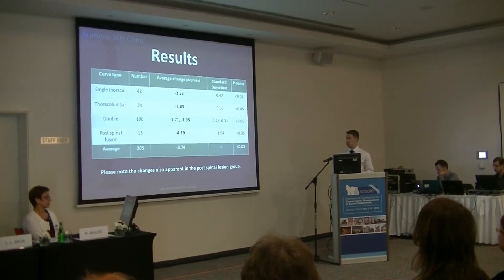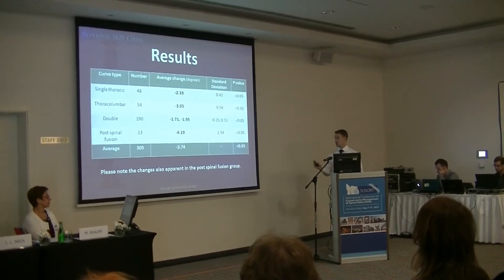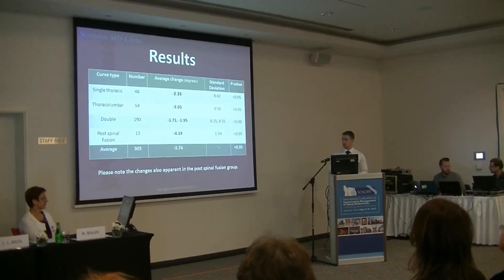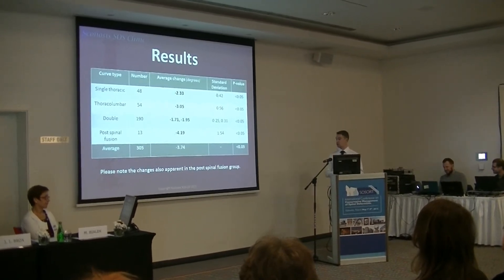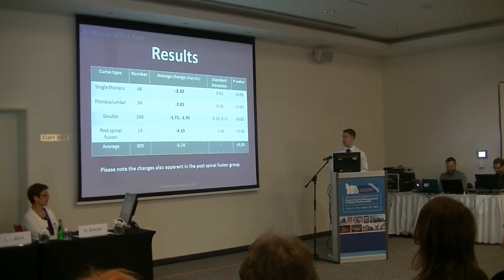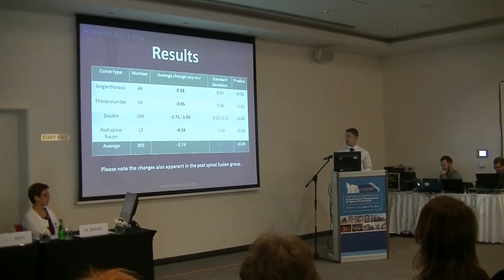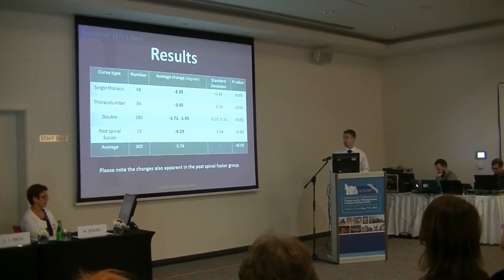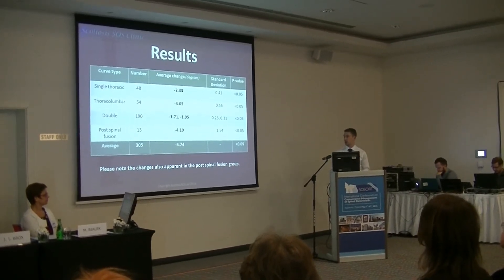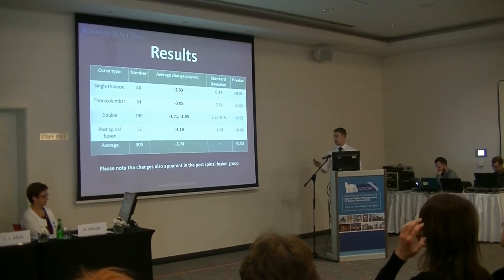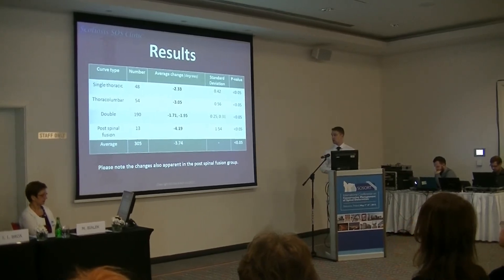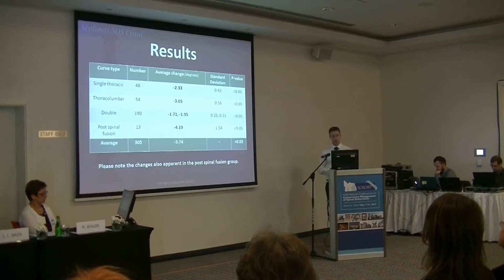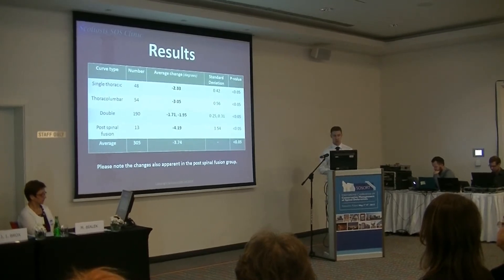The results generally turned out very positive. Taking the two-degree angle of measurement error with the Bunnell scoliometer, we got clinically significant differences in single thoracic and thoracolumbar curvatures. Double curvatures showed approximately 1.71 and 1.95 degrees reduction over the four weeks.